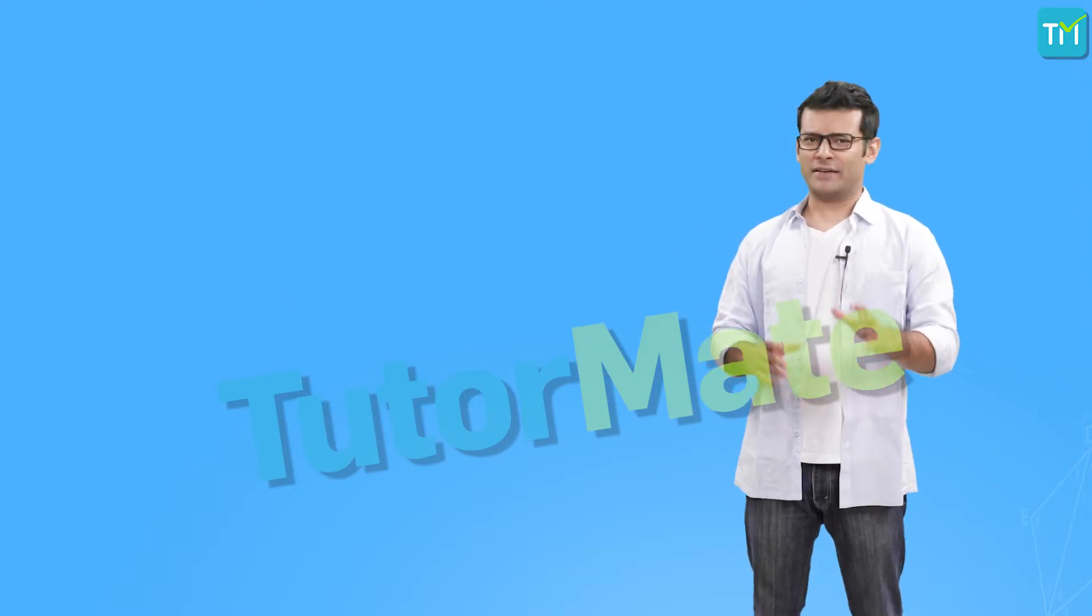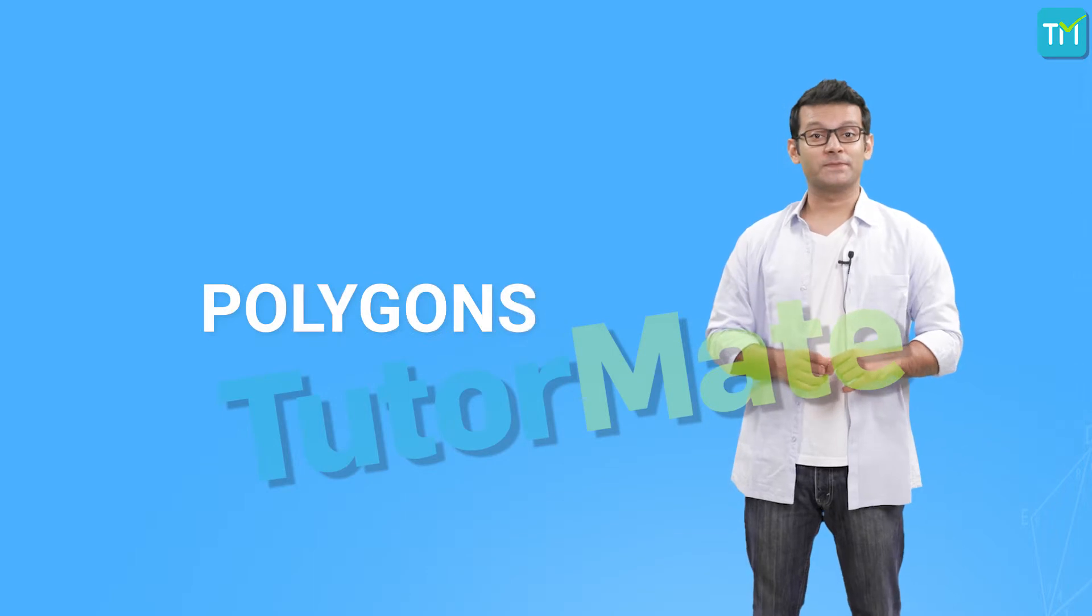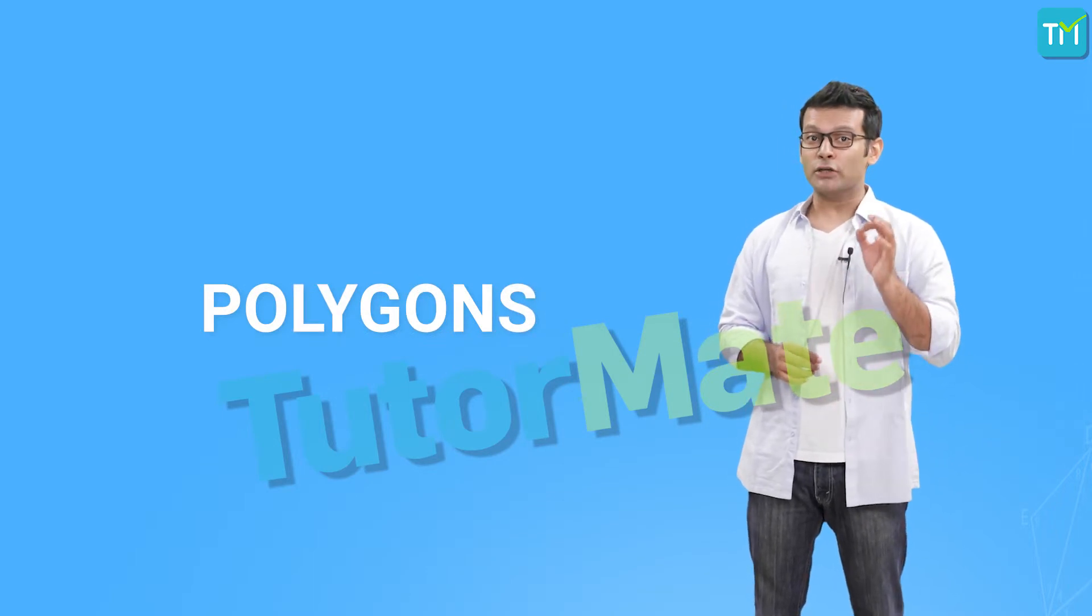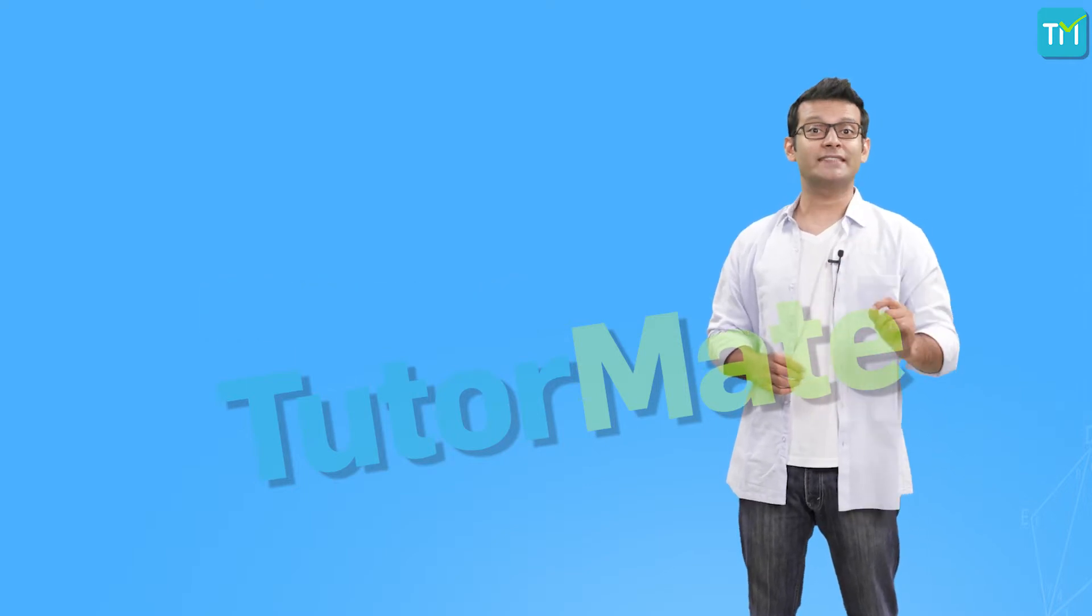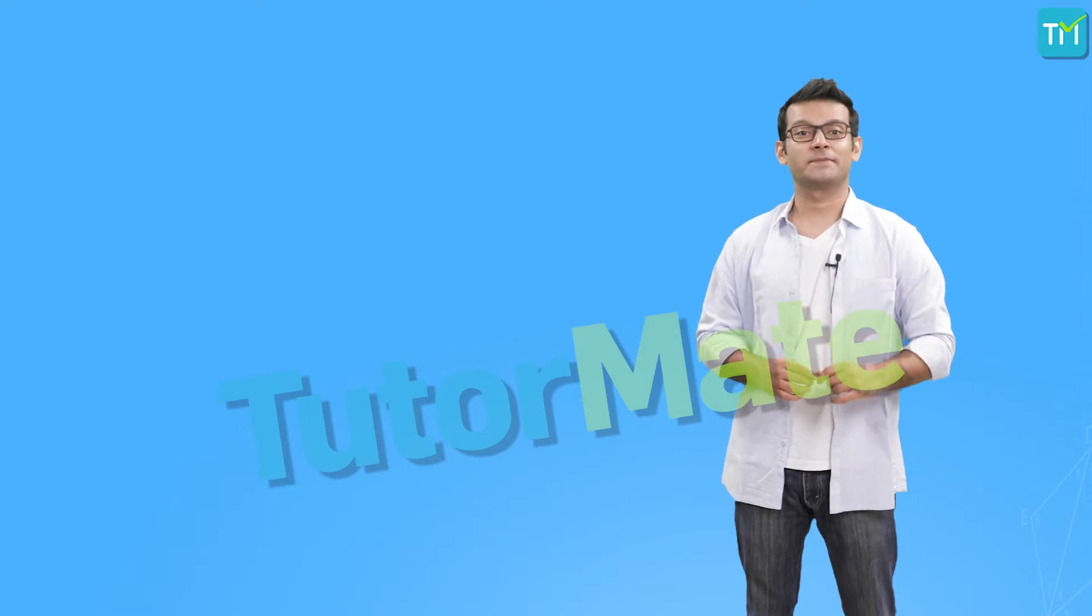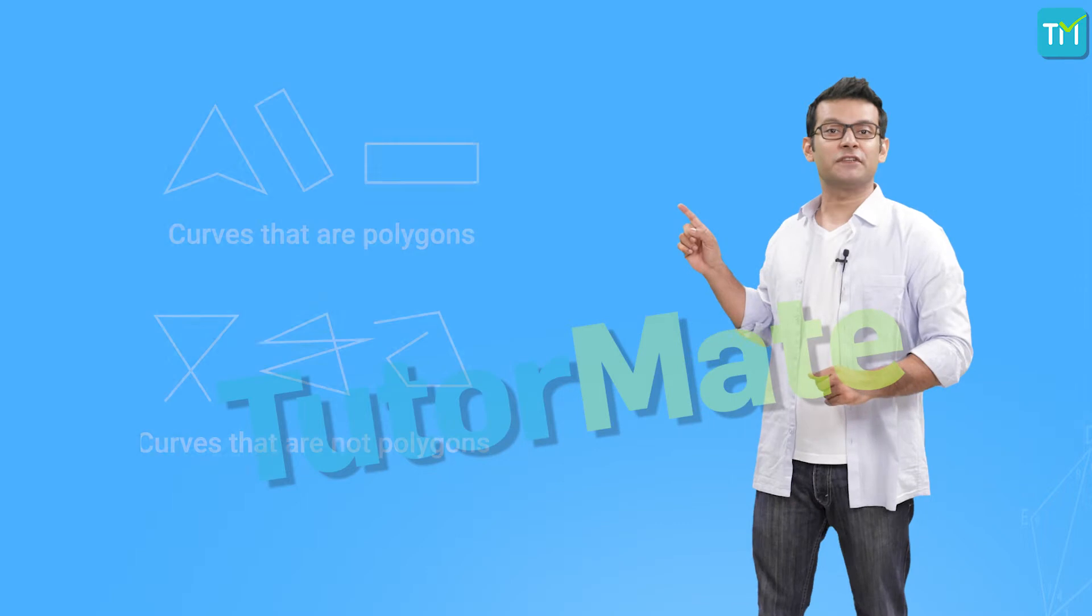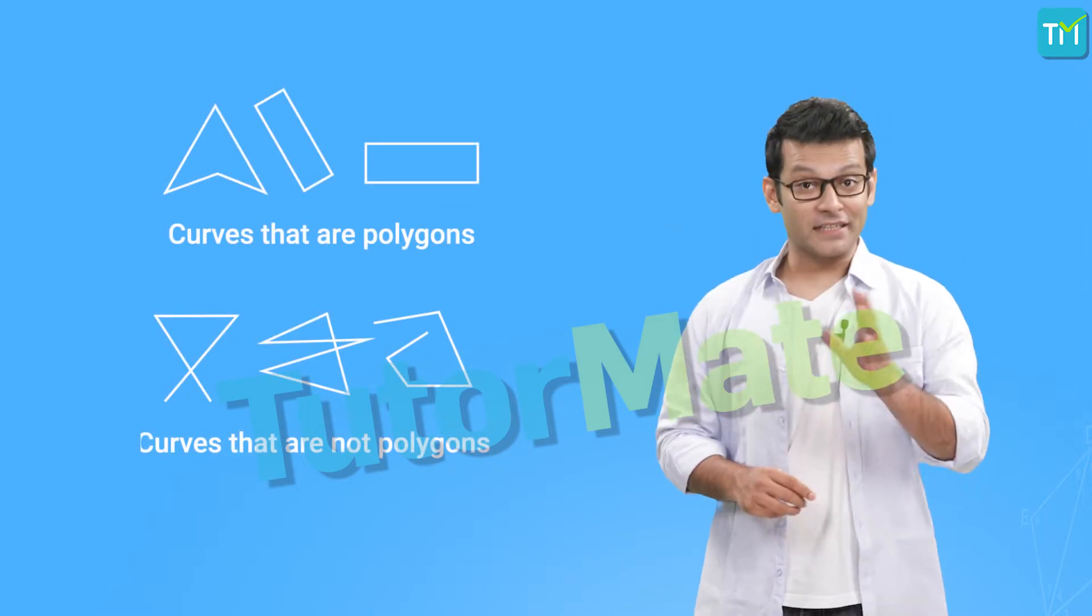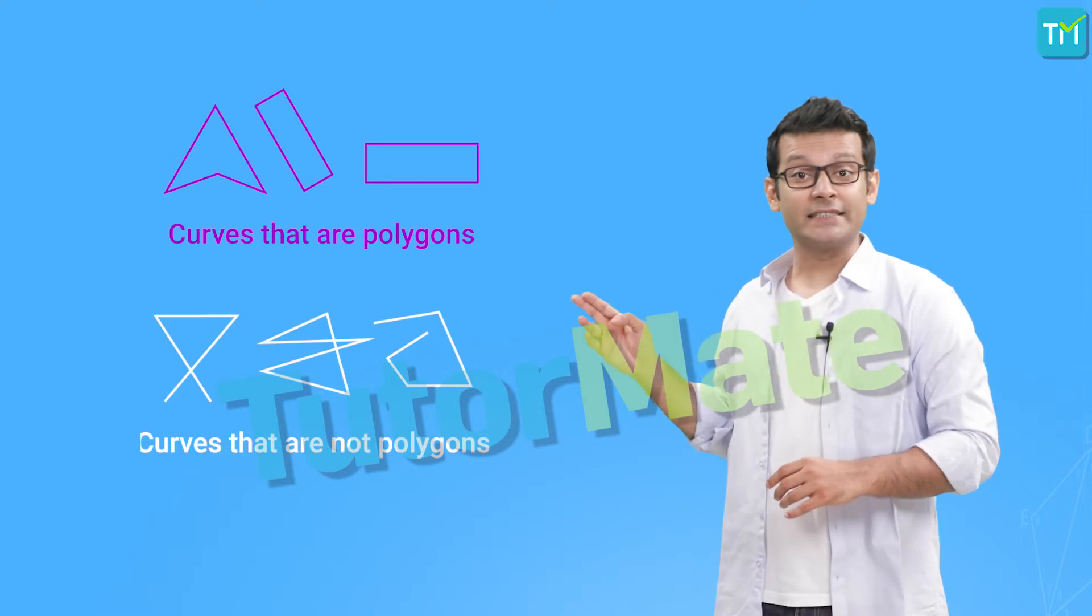So far, we have just seen curves. They look like random shapes made by random lines. And then, we have polygons. A polygon is a simple closed curve formed by multiple line segments such that no two line segments intersect except at their end points. So, let's try and identify the polygons out of these figures. Clearly, these figures are polygons and these are not.